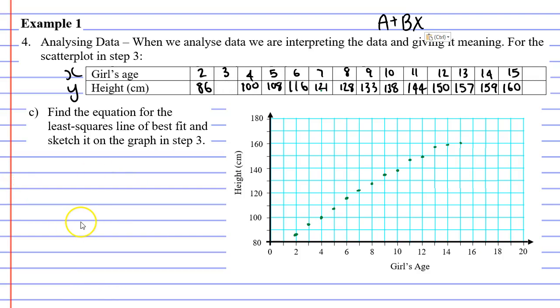We'll now move on to question C, that wants us to find the equation for the least squares line of best fit, and sketch it on the graph in step three, which just basically means this graph here on the right. Now, usually, this is a very long and tedious type of question, but not so much with the Casio calculator. I want to refer back to this A plus BX. Now, I'm going to change it around. I'm actually going to make it BX plus A. I'm just going to switch them around, which just makes this easier.